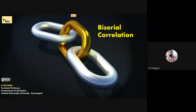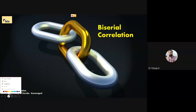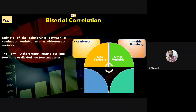I'm going to concentrate on biserial correlation. The name itself tells us what it is: 'bi' means two, so for biserial correlation we have two variables. One variable should be continuous in nature, and the term 'serial' represents that continuous variable. For doing a biserial we need one variable in continuous format.